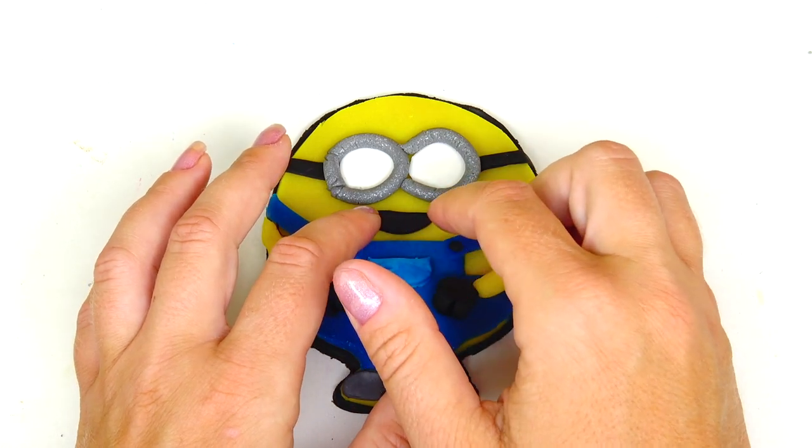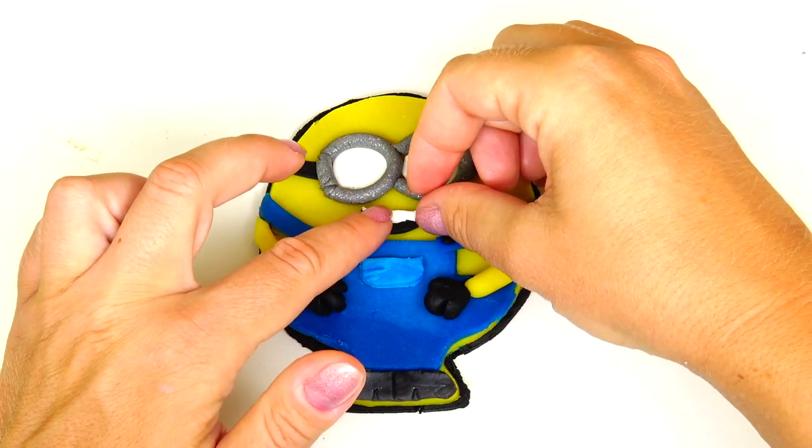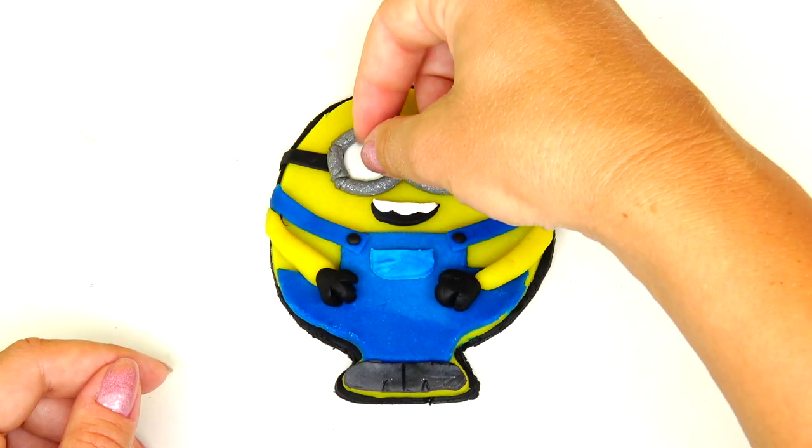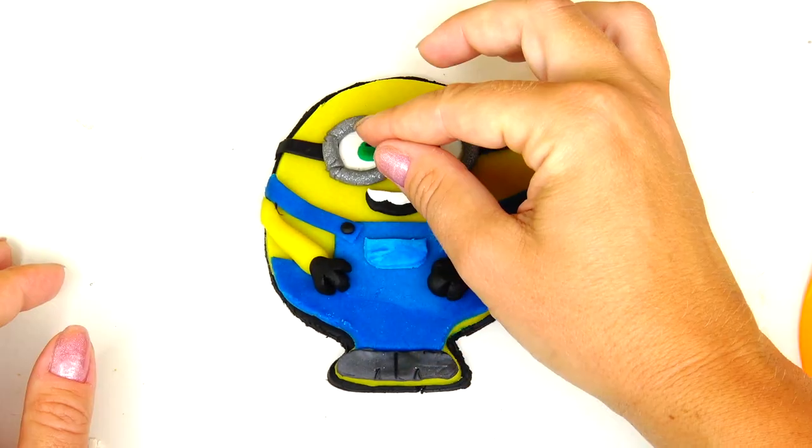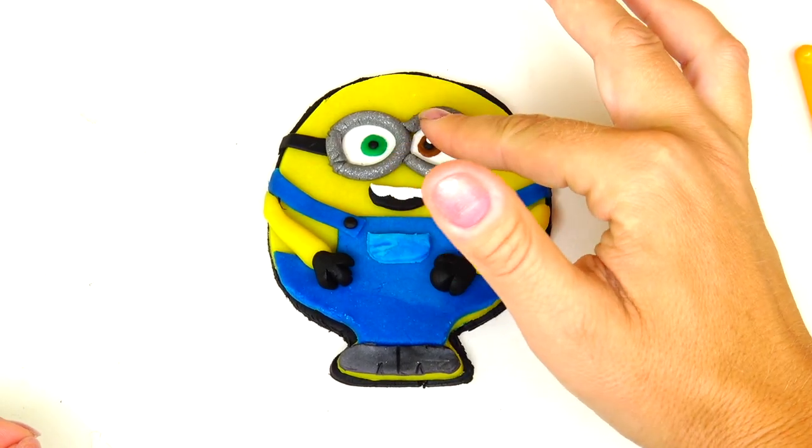Adding smile, adding teeth. Bob has two different color eyes: green and brown. Adding pupils and white dot for the light reflection. I think Bob looks just like Bob!